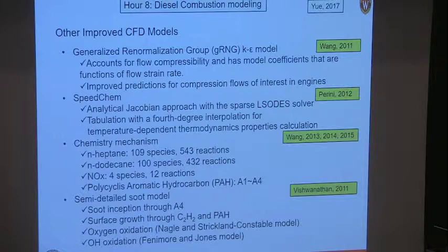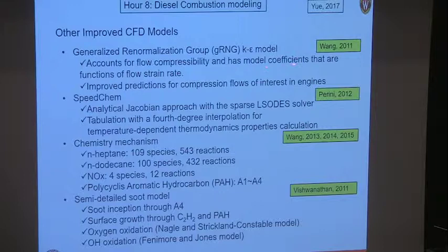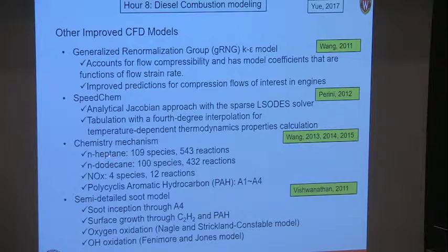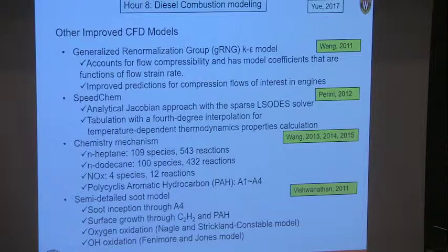For the spray calculations, the models used include the RNG k-ε turbulence model — which accounts for flow compressibility and has coefficients that are functions of local flow strain rate — and SpeedChem, which is an analytical Jacobian approach with sparse solvers for the chemistry. Tabulation of temperature-dependent thermodynamic properties is used rather than solving polynomials. The chemistry mechanism includes n-heptane with a 109-species model, dodecane with 100 species — all in a multi-chemistry mechanism with NOx and PAH models up to pyrene. A semi-detailed soot model includes soot growth with acetylene and oxidation by oxygen and OH.